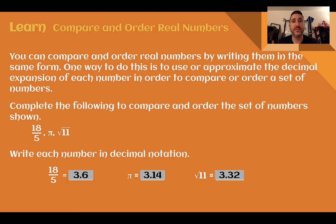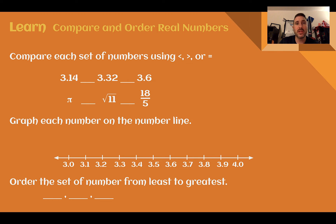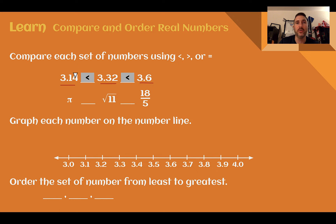We could use our strategies from previous lessons to figure out what the square root of 11 was. Now that we have our decimal approximations for each of these, we can compare them — figuring out which one's greater than others — and put them in order from least to greatest. So 3.14 was the smallest, 3.32 was larger than that, and then 3.6 was larger than both 3.32 and 3.14.